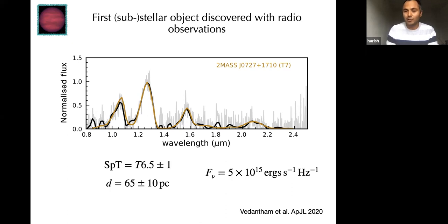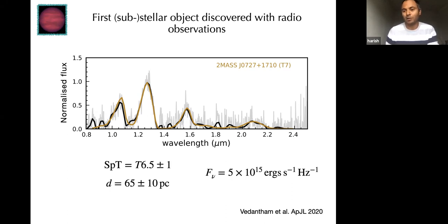Thermal emission scales as temperature to the fourth power — Stefan-Boltzmann's law — so as objects get colder, approaching the brown dwarf-planet boundary, they become incredibly hard to find in infrared surveys. But radio emission is non-thermal, so you can have bright radio emission even from a very cold object. This gives confidence that we can use radio observations to directly find free-floating planets or objects near the brown dwarf-planet boundary.